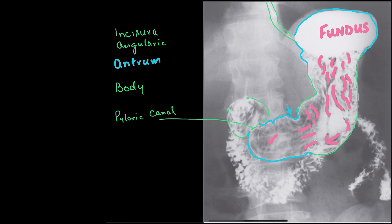After that, this area is known as duodenal cap. This is my duodenal cap. It is also known as first part of my duodenum or the superior part of the duodenum.